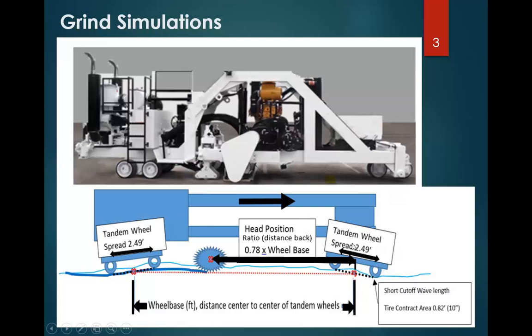Some of the dimensions that we input are the tandem wheel spreads. ProVal has one variable that you can input and it defaults to 2.49 feet. If you enter 2.49 feet, it applies to both sets of tandem wheels. And then it also has a length dimension that you put in there. That's the length between the center of the front tandem wheels to the center of the back set of tandem wheels.